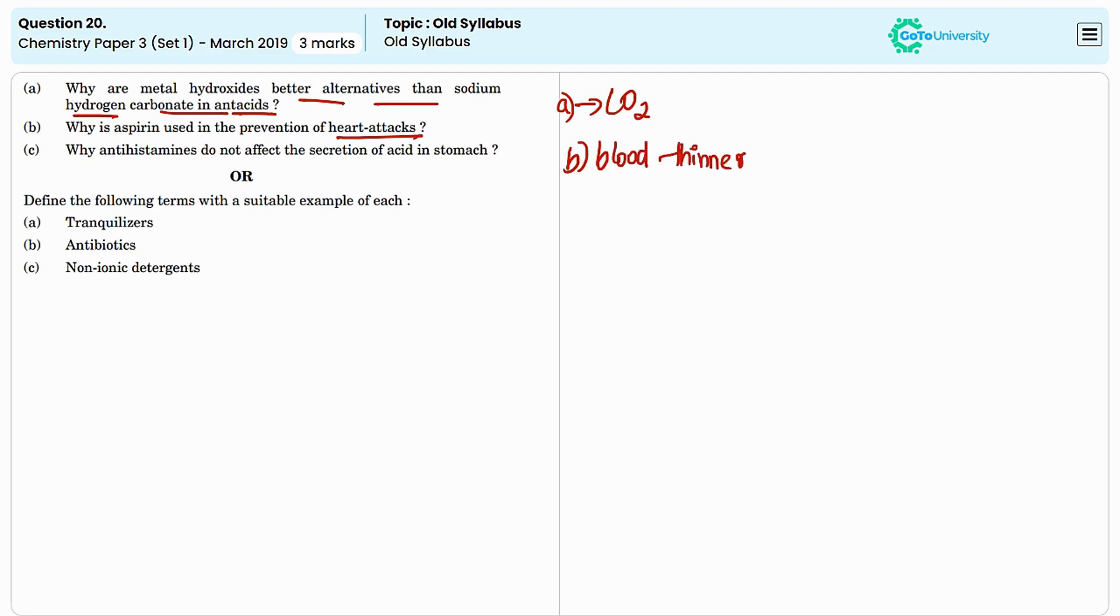It inhibits the enzyme cyclooxygenase which reduces the production of thromboxane, a substance that promotes platelet aggregation.